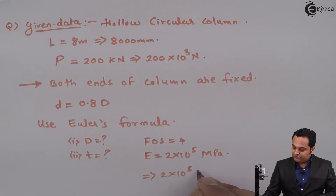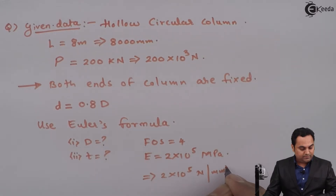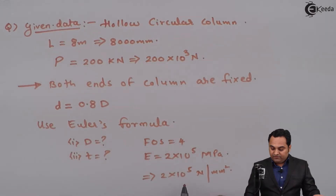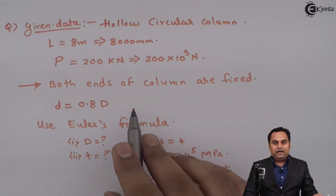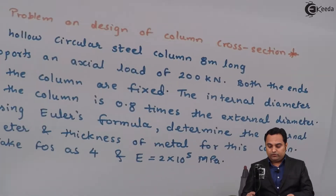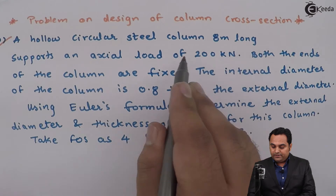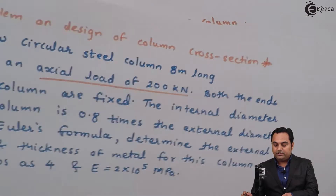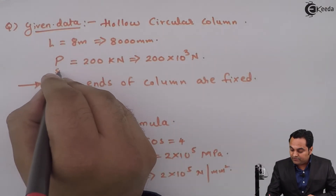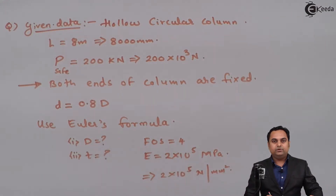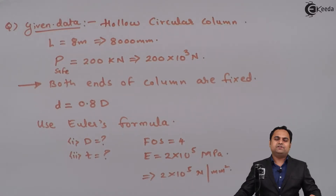Young's modulus E is 2 × 10⁵ Newton per mm². Since the factor of safety is given and we must use Euler's formula, the axial load of 200 kN given in the problem is the safe load. We use it with FOS to get Euler's load.